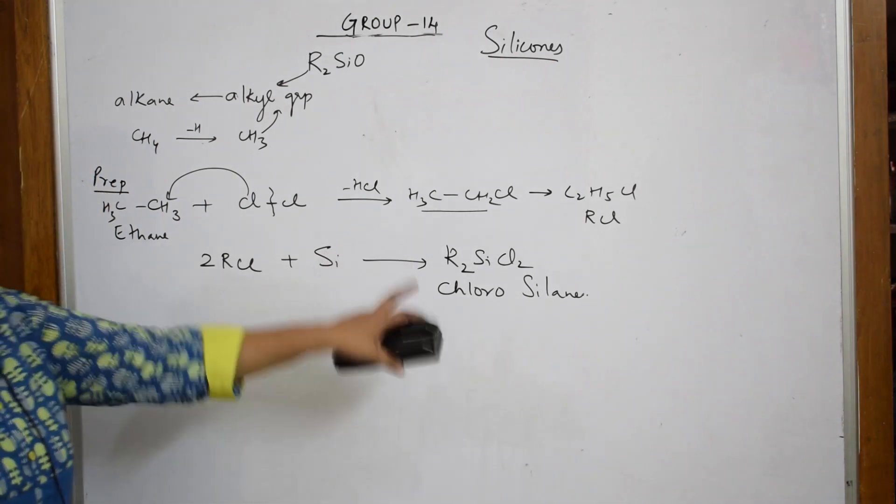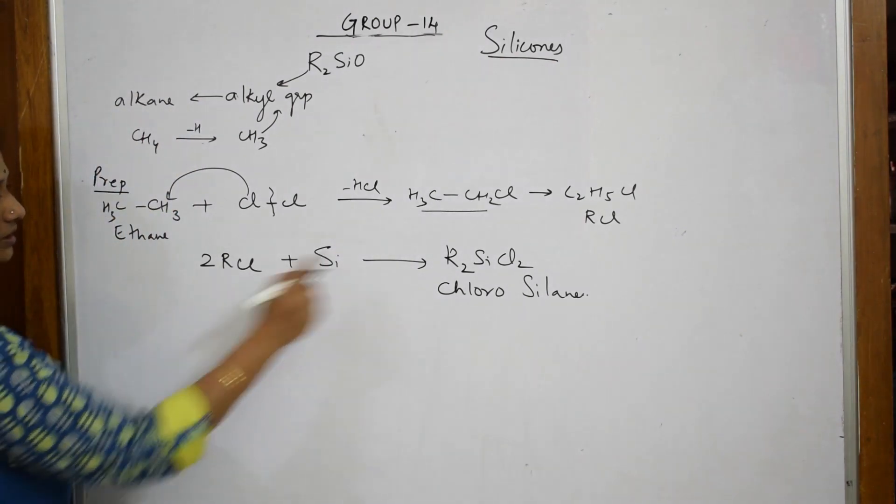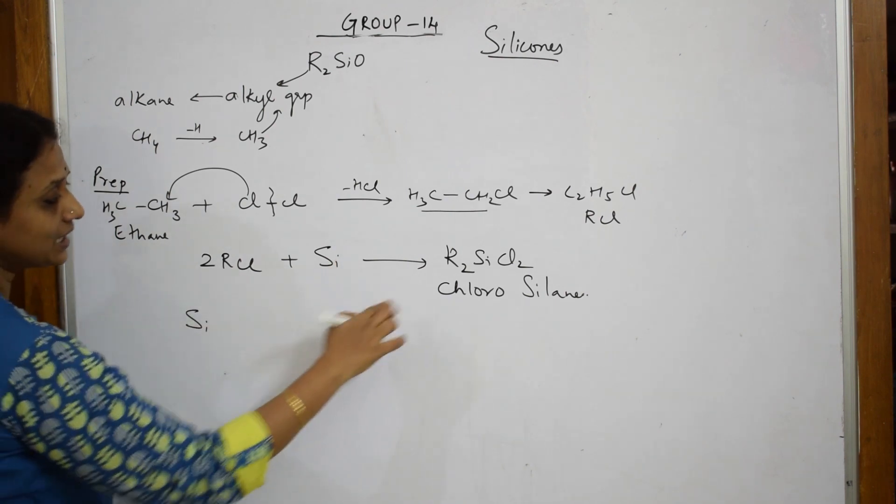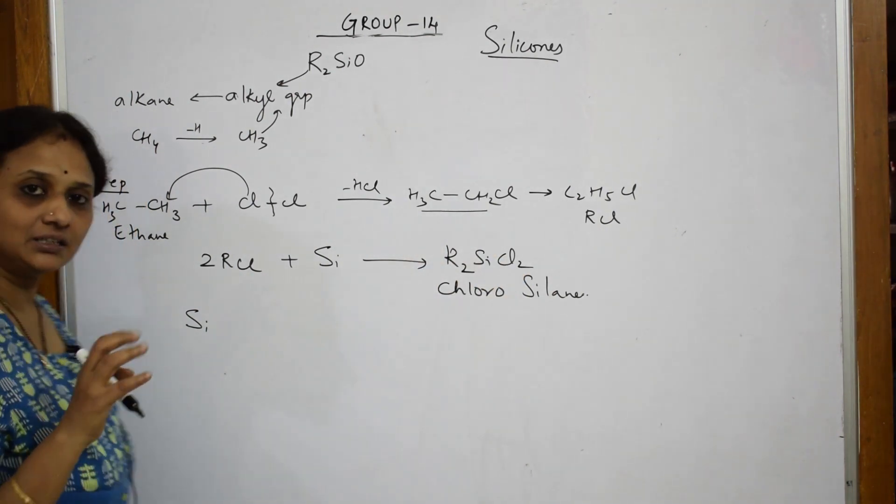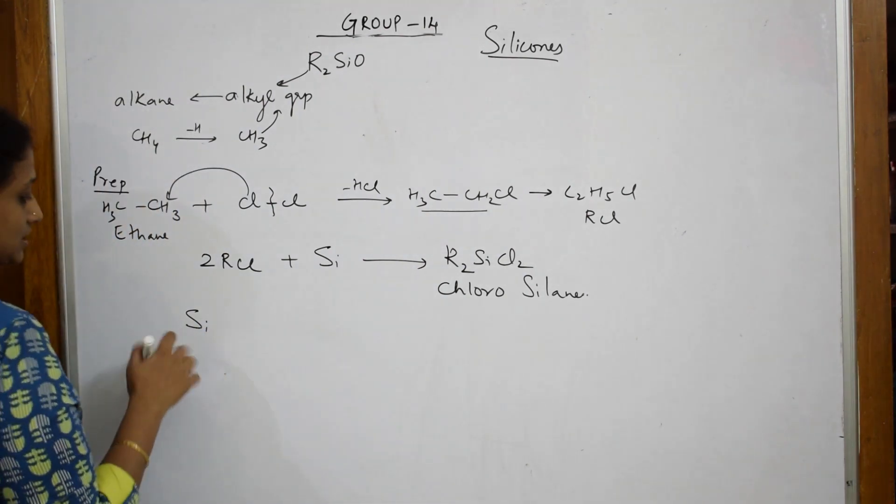Now, to this chlorosilane, if I basically write the structure of chlorosilane, observe carefully. I am going to add water molecules. How many water molecules? Two. How many chlorines? Two. Now, basically, we have seen the structure that is tetrahedral structure of silicon.